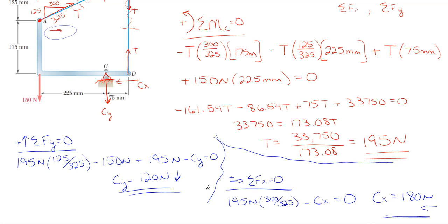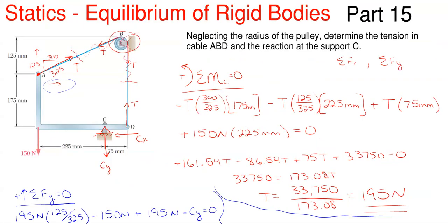That's how you would solve this particular problem — finding the tension force in the cable and then finding the reactions at joint C. It just took a little bit of understanding what they mean by neglecting the pulley, and knowing that it is a frictionless pulley, so the forces on each side of the pulley are going to be exactly the same. I hope this video was helpful. If you want to see more problems solved, please check out the other videos on our channel, as this is the 15th part in the series. Please like, leave a positive comment, and subscribe.